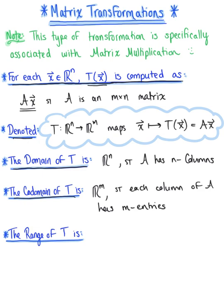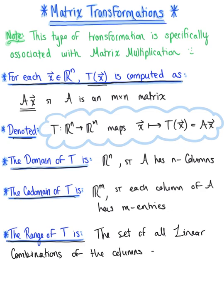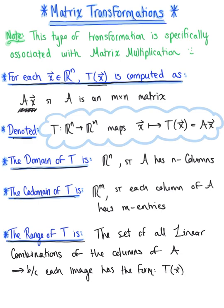Last but not least, the range of a matrix transformation is the set of all linear combinations of the columns of A. This is because each image has the form matrix A times vector x — that is, T of vector x equals matrix A times vector x — which is the new vector produced by our matrix multiplication.